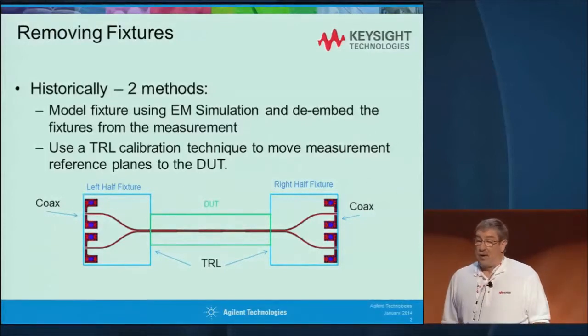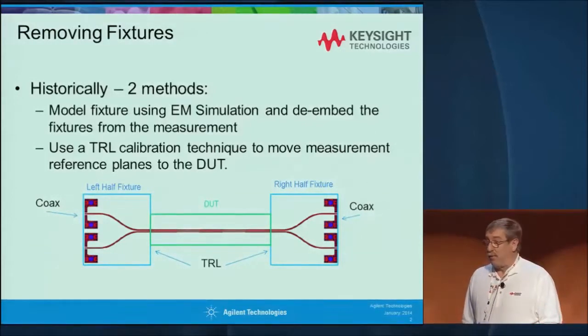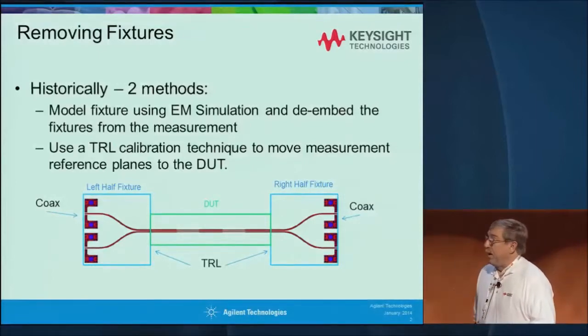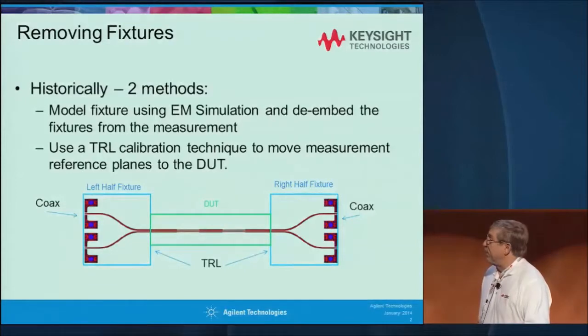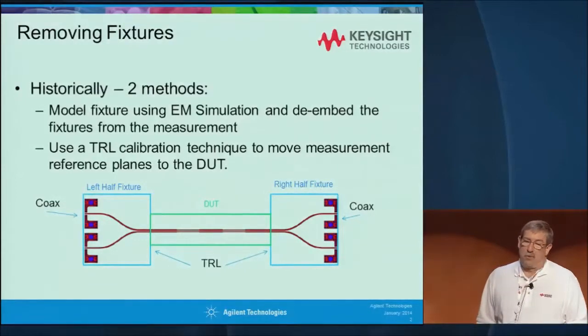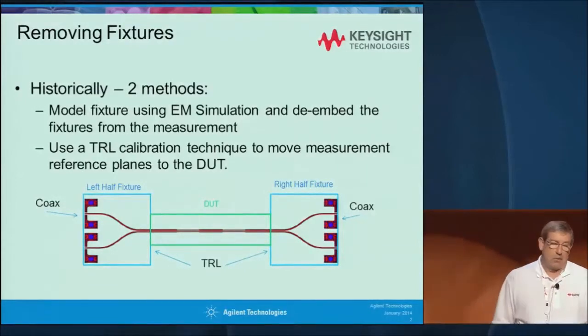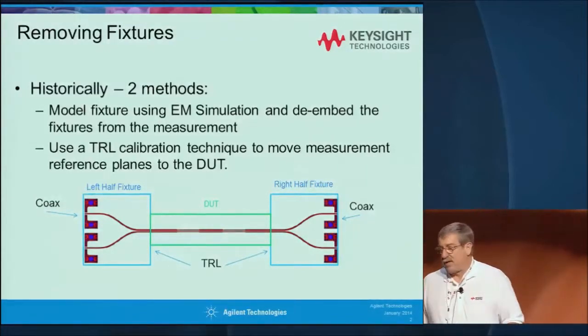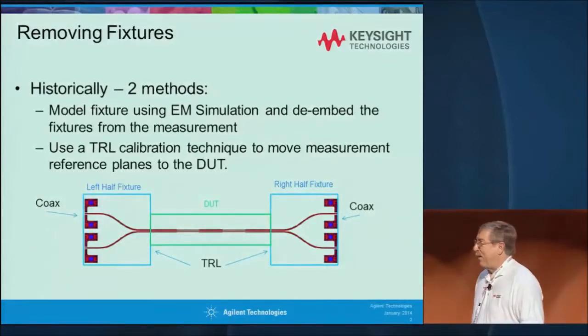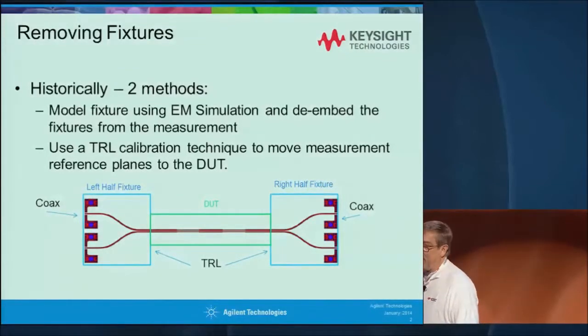Now you're relying on the accuracy of the material properties and other things for that model. Probably the most common method that's been around for a long time is using a TRL calibration — a through, reflect, and one or more lines. I've worked with customers over the last 10 years and helped people build 30 or 40 TRL cal kits, and that was the way we always recommended to get the fastest and most accurate fixture removal.